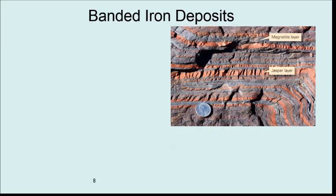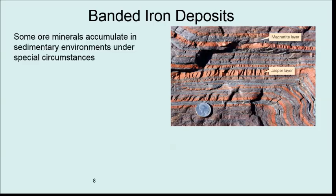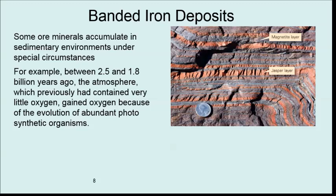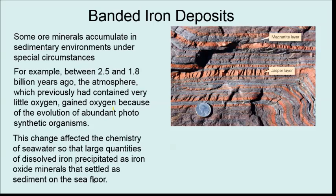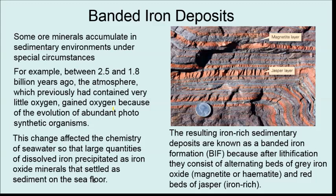Another type of sedimentary process forms banded iron deposits, which are not forming anymore. They formed under very special circumstances, estimated between 2.5 and 1.8 billion years ago, due to the change in atmospheric oxygen. The rise of photosynthetic microorganisms pumped more oxygen into the atmosphere, causing greater weathering and erosion of the land surface, so more iron was washed out into the sea. These deposits show repeating iron-rich sedimentary bands of magnetite and jasper worldwide — we call them banded iron formations, or BIFs.